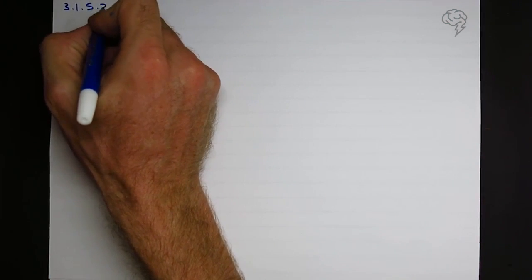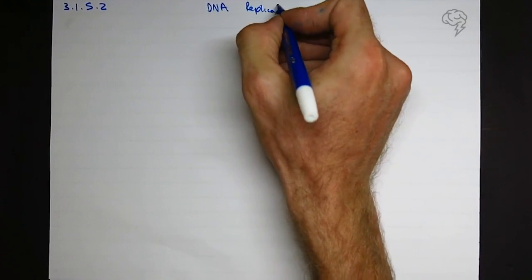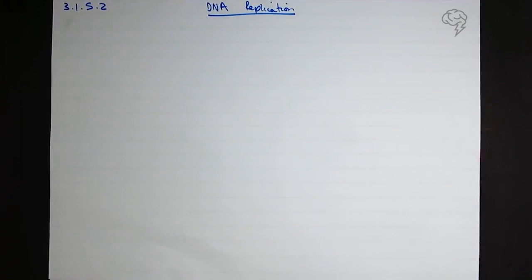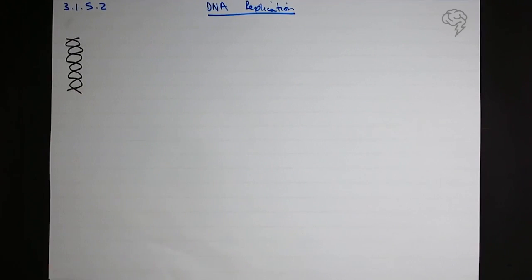Okay, 3.1.5.2 DNA replication. DNA usually is a double helix. I'm going to do this as a pretty bad representation of what the double helix looks like, but for diagrammatic purposes, it's okay.